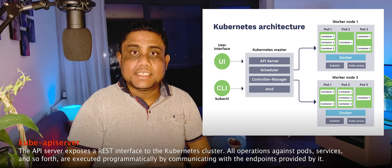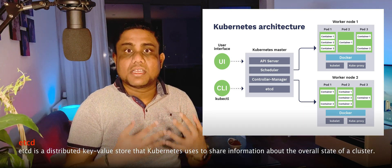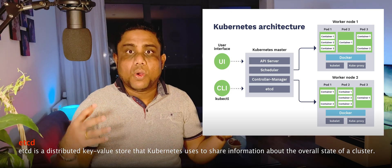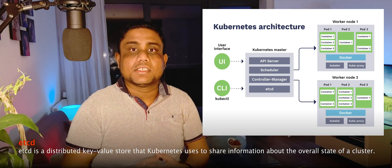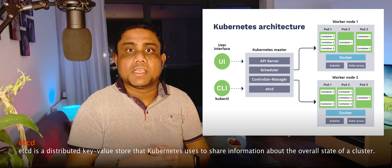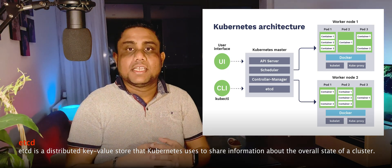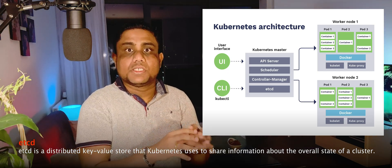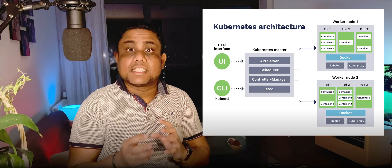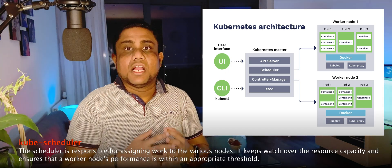Then there is etcd — it is a highly available, consistent key-value store. All the details about the Kubernetes configurations and all the application component definitions that you are setting up within the cluster will be stored in etcd as key-value pairs.